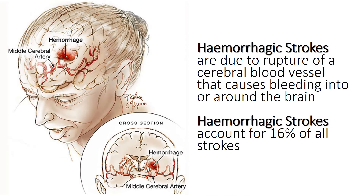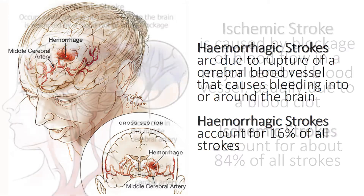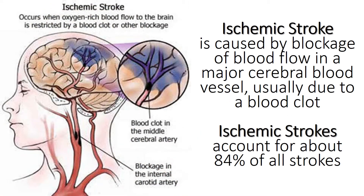Hemorrhagic strokes are due to rupture of a cerebral blood vessel that causes bleeding into or around the brain. Hemorrhagic strokes account for 16% of all strokes. An ischemic stroke is caused by blockage of blood flow in a major cerebral blood vessel, usually due to a blood clot.